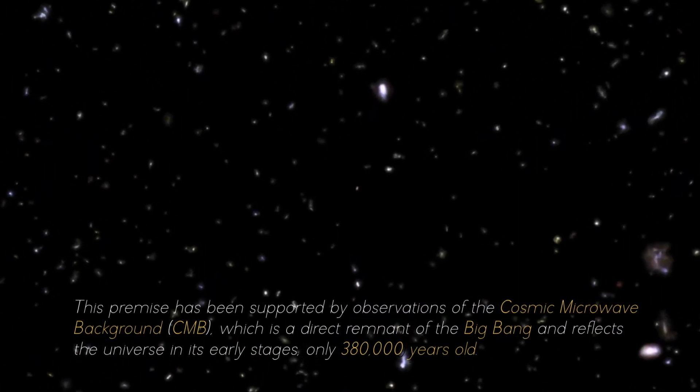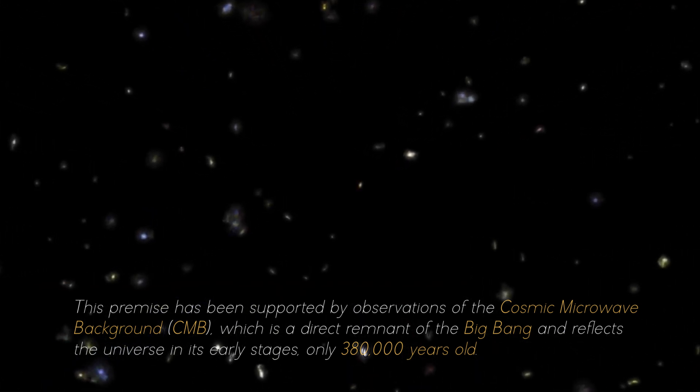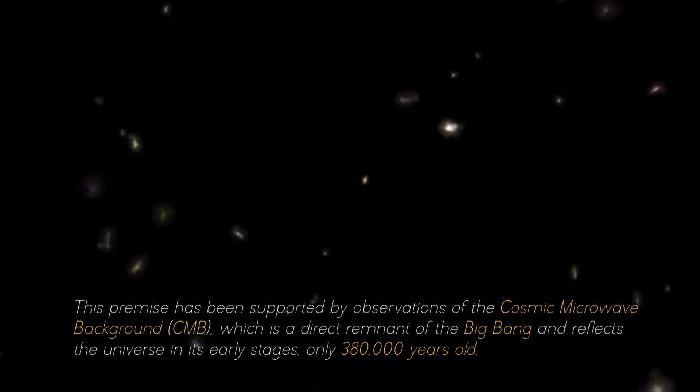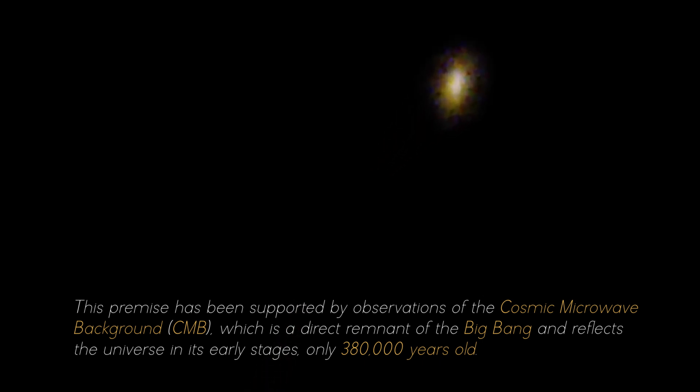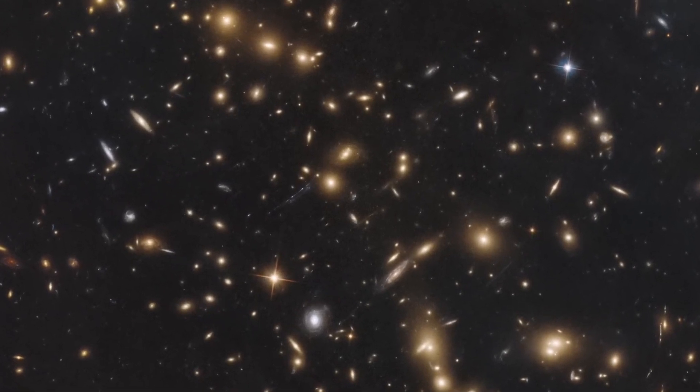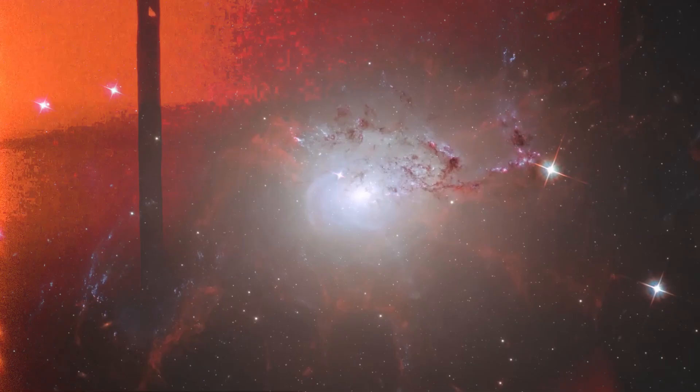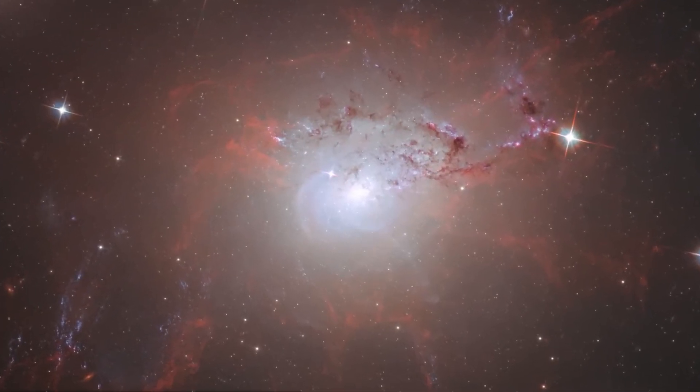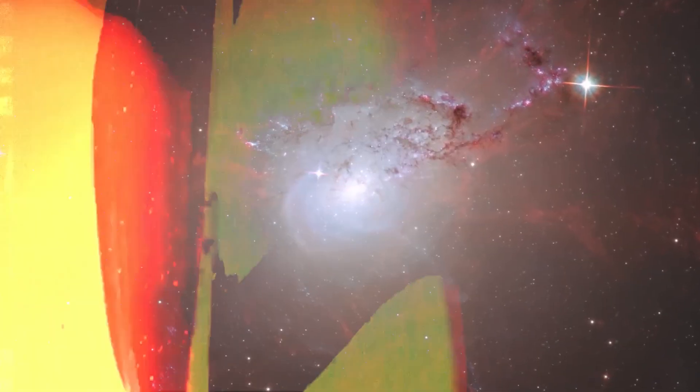This premise has been supported by observations of the Cosmic Microwave Background, which is a direct remnant of the Big Bang and reflects the universe in its early stages, only 380,000 years old. The uniform distribution of the CMB across the sky implies that the universe expanded rapidly and uniformly in all directions in those early times. However, in today's universe this could not be true.